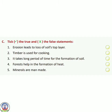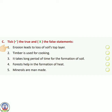Exercise C: Tick the true and cross the false statement. Number 1 — erosion leads to loss of soil's top layer. यानि कि जो erosion होता है उसकी वजह से soil की ऊपर की layer का नुकसान होता है। Yes, so we will put a tick.